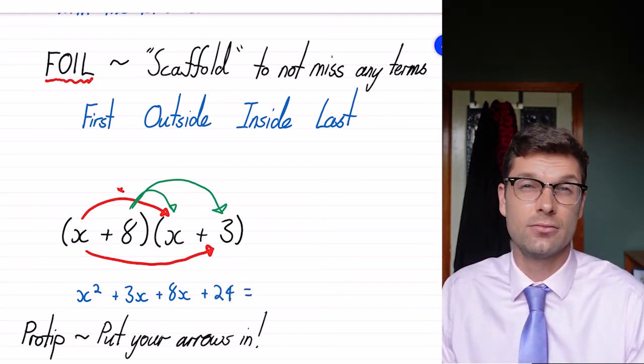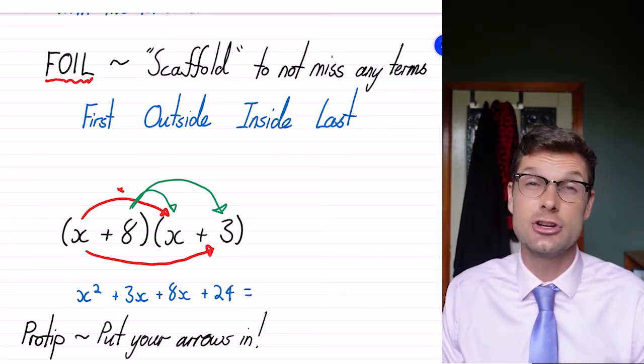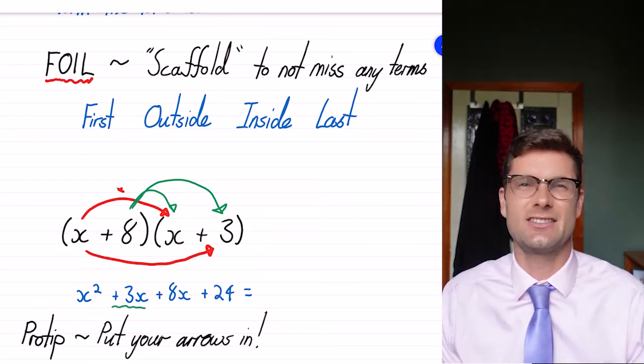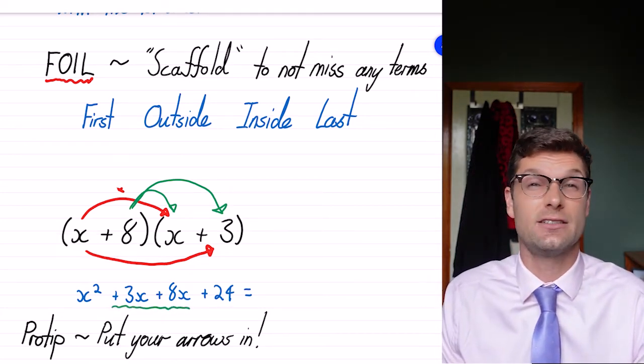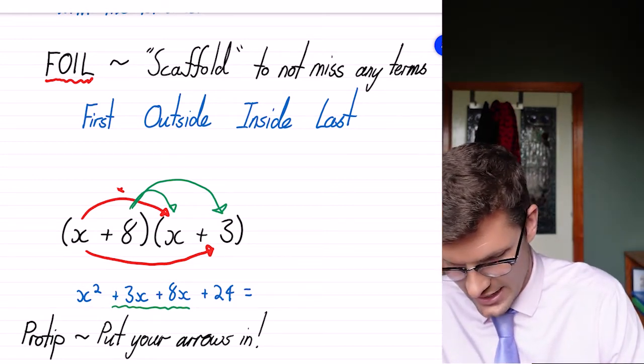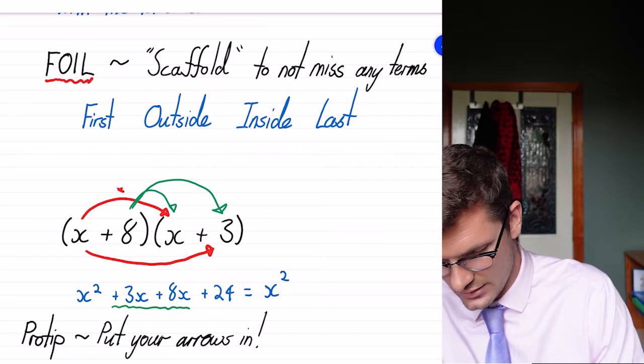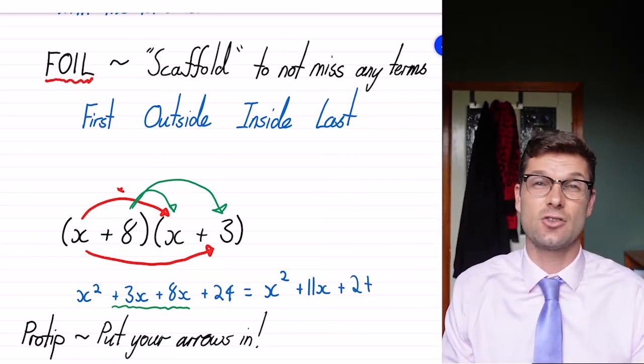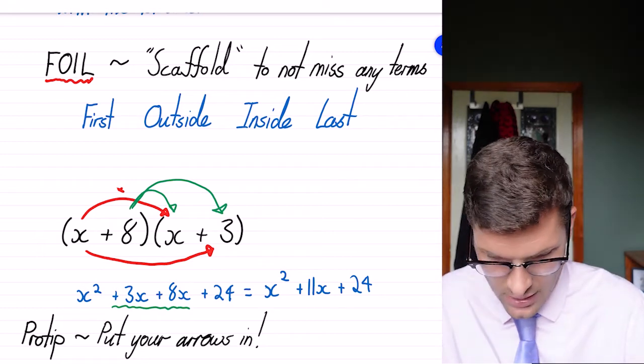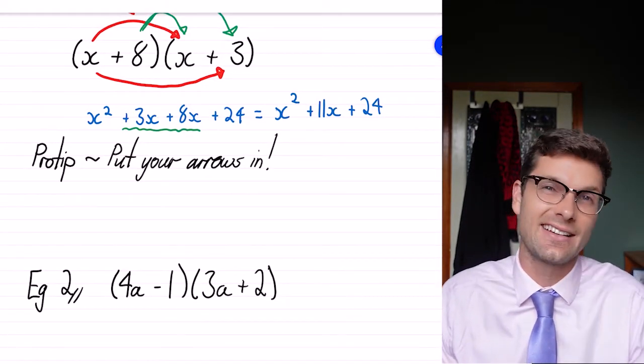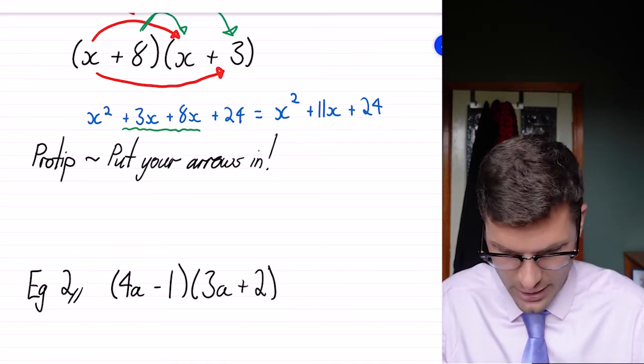We do have to collect our simplified terms. And usually, if it's written like this, they're going to be our two middle ones. So we're not going to have to look too hard to find them. So this simplified form is x squared plus 11x plus 24. And that's all we've got to do. So please throw your arrows in. It'll just mean you're not missing anything. And I do think you'll find it pretty helpful.